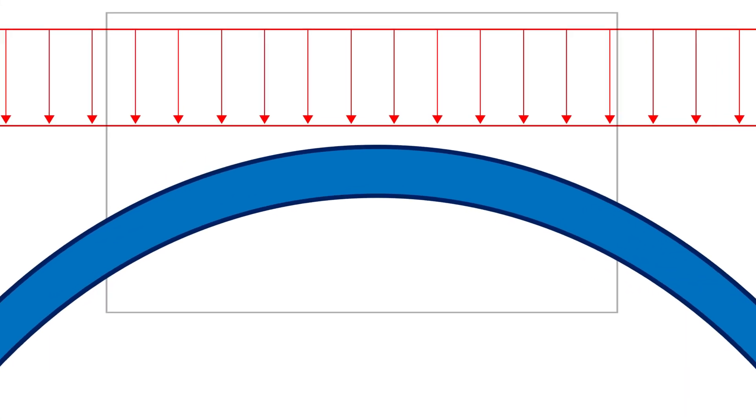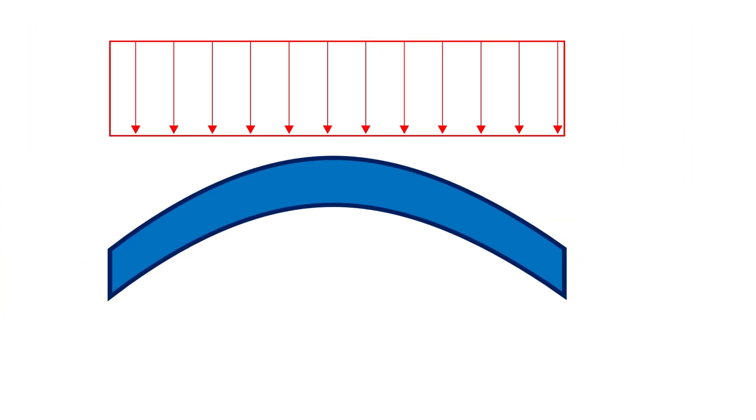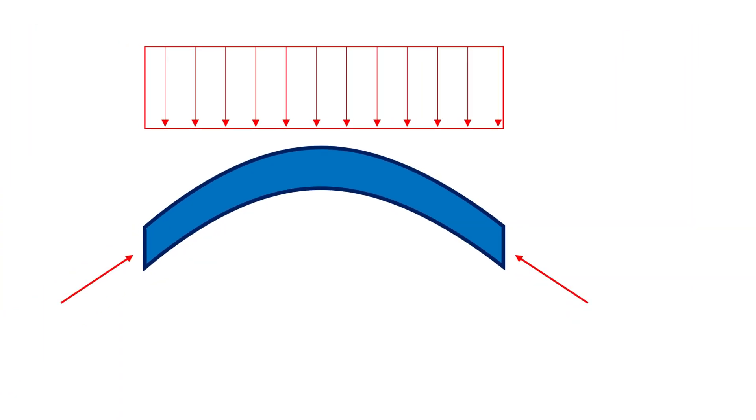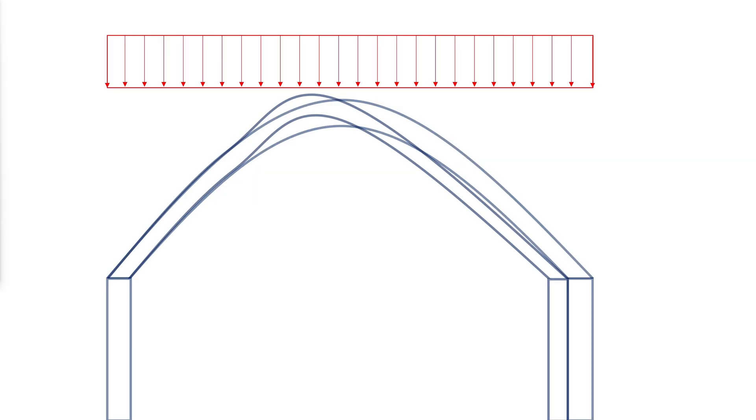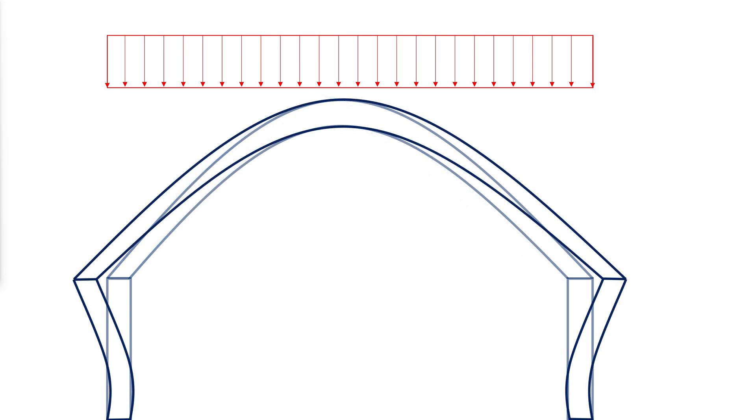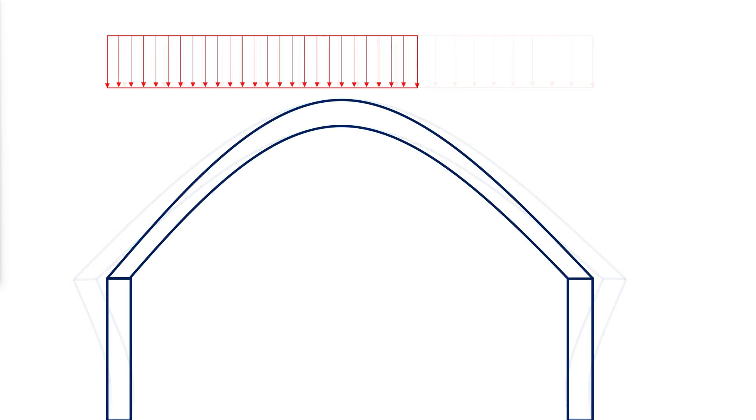Arches are efficient structural forms that resist loads primarily by axial compression. In practice, pure axial compression without moment cannot exist due to imperfections and eccentricities, support spreading, and unsymmetrical loading.